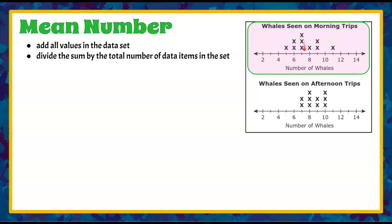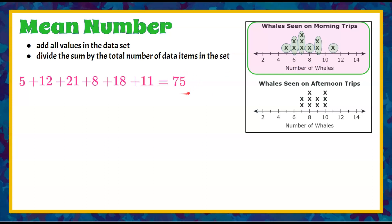We're going to add those together: five plus six and six is twelve; three sevens adds twenty-one; one eight; two nines is eighteen; and then we have one data point of eleven. Adding all that up, we get 75. We had ten data points representing ten morning trips, so we take our sum of 75 and divide by ten. The mean or average number of whales seen on morning trips was 7.5.